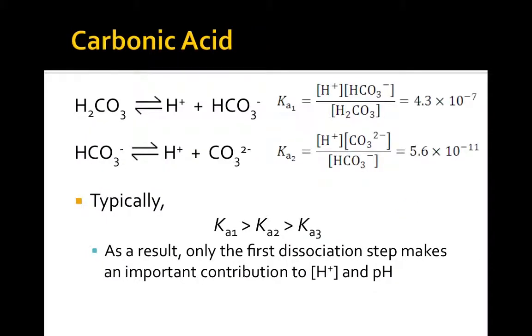Here is the two-step dissociation equilibria for carbonic acid, along with their acid dissociation equilibrium expressions, Ka1 and Ka2. Carbonic acid is a very typical polyprotic acid in that the first dissociation constant is much larger than the second, and so on. This makes sense because removing another positively charged proton from a negatively charged ion would be increasingly more difficult.